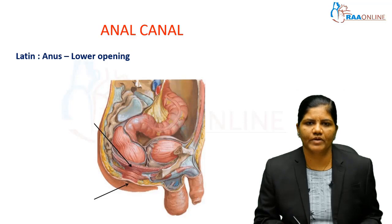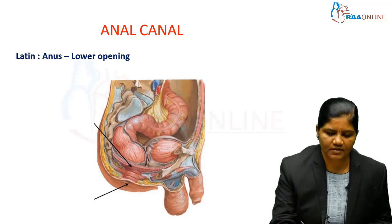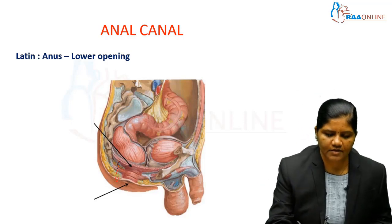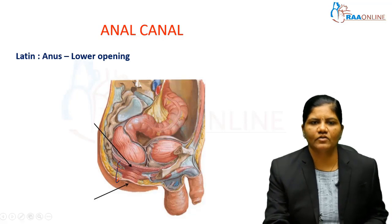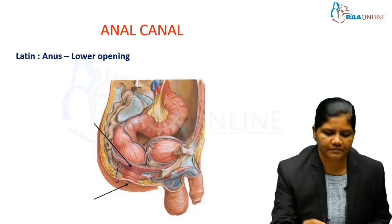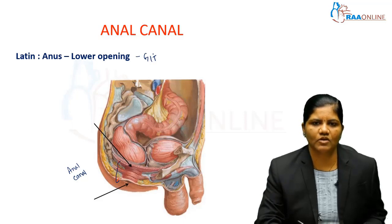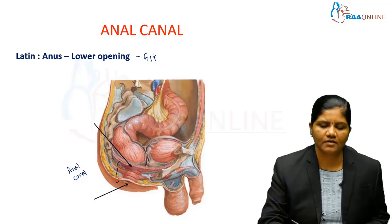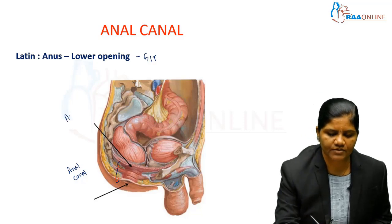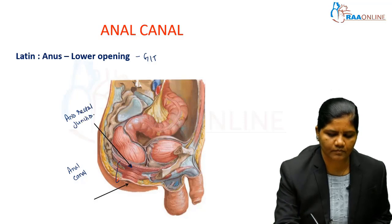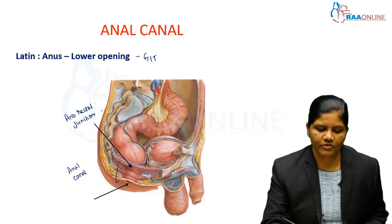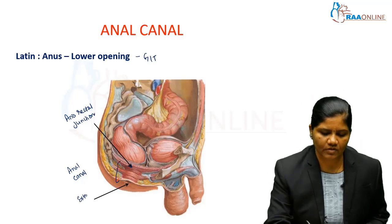The anal canal is the lowermost opening of the gut, or it is the lower opening of the large intestine. The extent of the anal canal is just below the pelvic diaphragm, or just below the anorectal junction, extending exteriorly into the external anal orifice or anal verge.